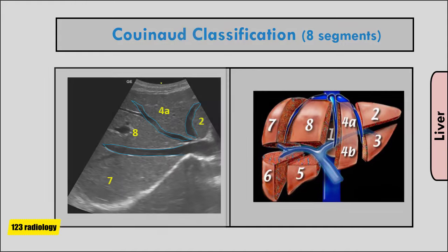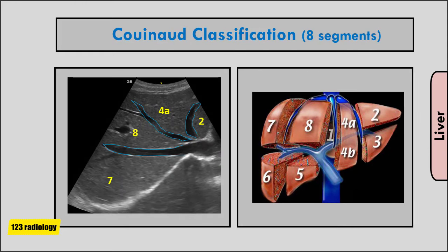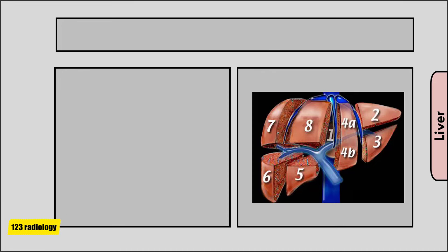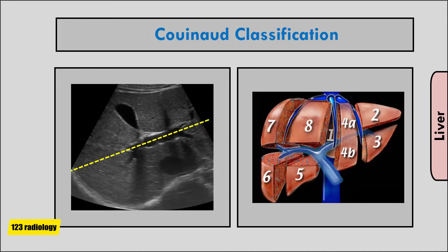There are eight segments. The right, middle, and left hepatic veins divide the liver longitudinally into four sections. Each of these sections is further divided transversely by an imaginary plane through the right main and left main portal branches.